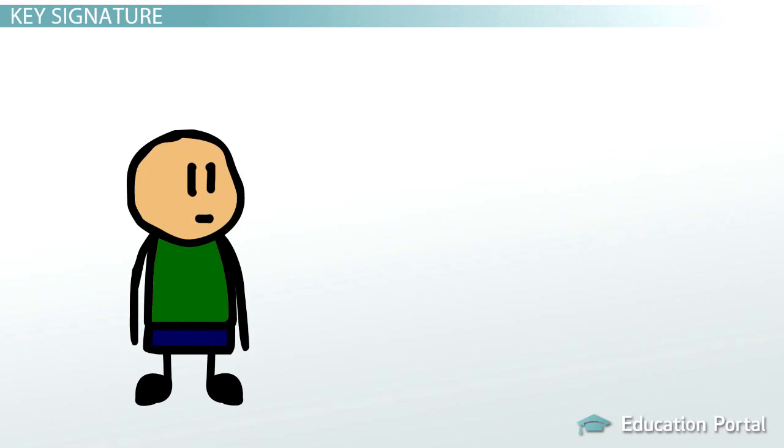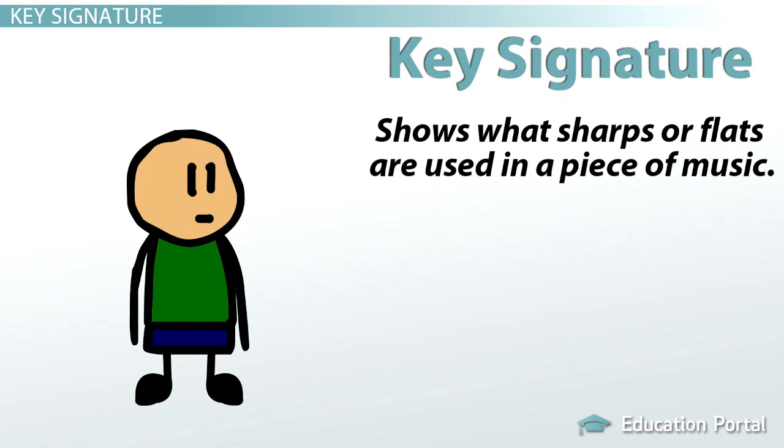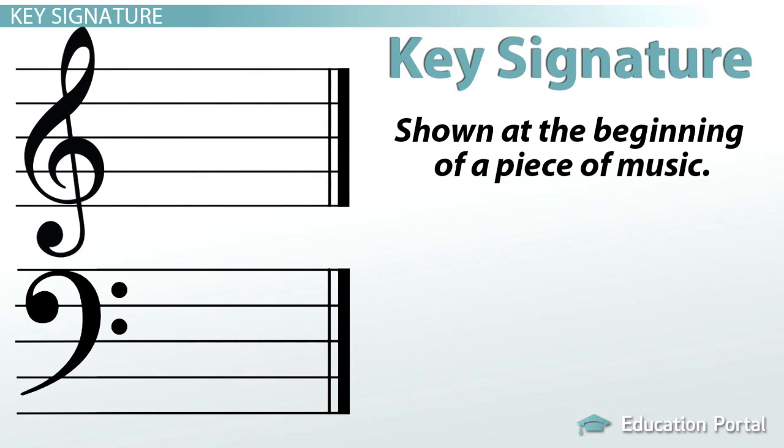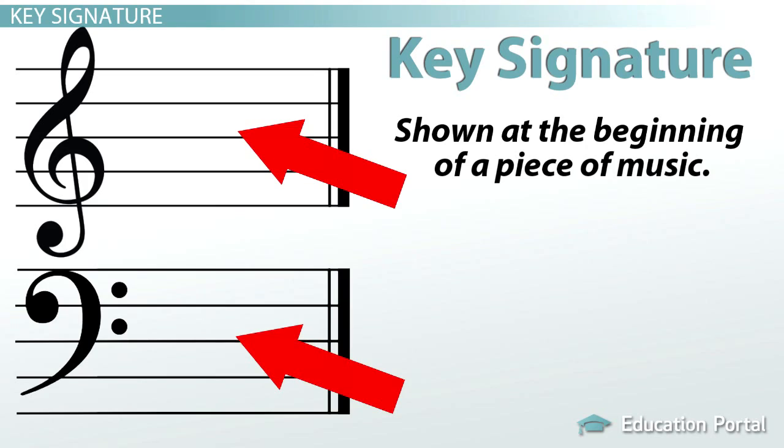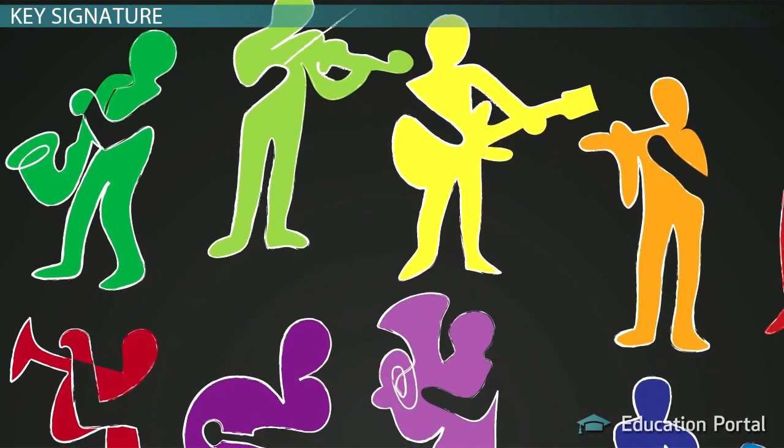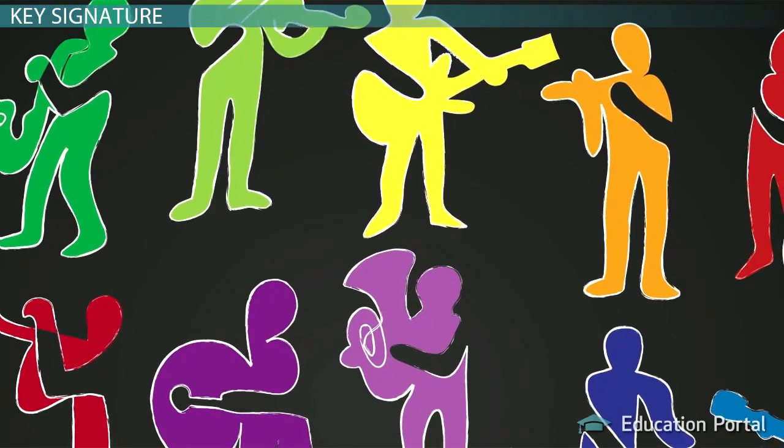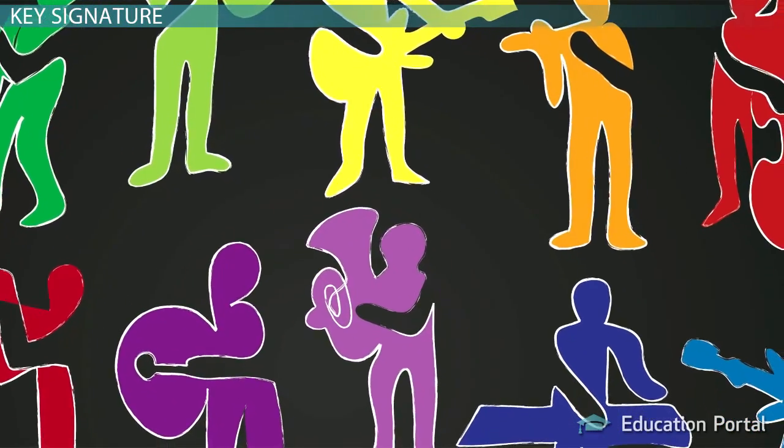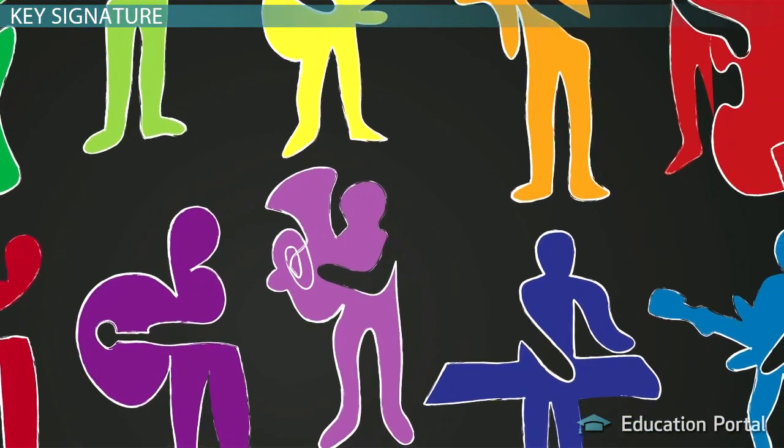This is exactly what key signature does for musicians. It shows what sharps or flats are used in a piece of music. The key signature is always shown at the beginning of a piece of music, and comes just after the clef sign. The key signature varies from piece to piece and instrument to instrument, so it's always important for the player to check the key signature before playing.